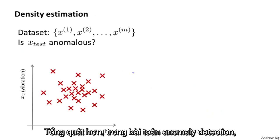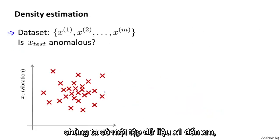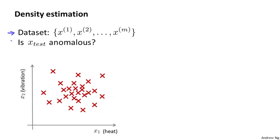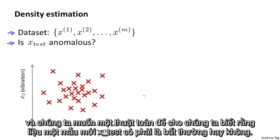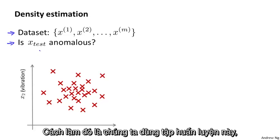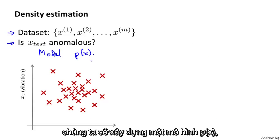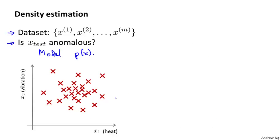More formally, in the anomaly detection problem, we're given some data sets, X1 through XM of examples, and we usually assume that these M examples are normal or non-anomalous examples. And we want an algorithm to tell us if some new example X test is anomalous. The approach that we're going to take is that given this training set, given the unlabeled training set, we're going to build a model for P of X.